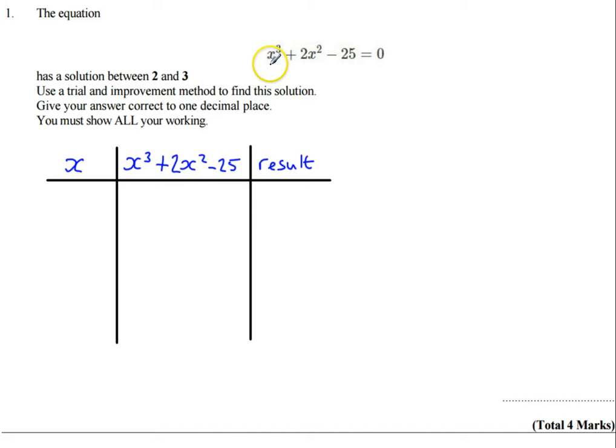Hi, in this question we have an equation x³ + 2x² - 25 = 0. We're being told that it has a solution between 2 and 3.